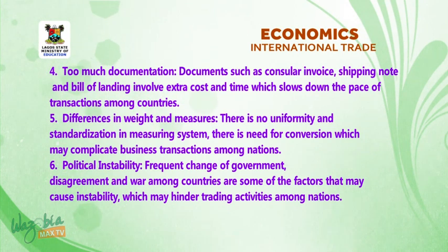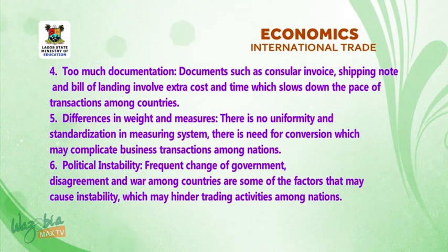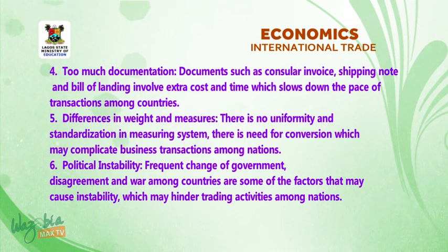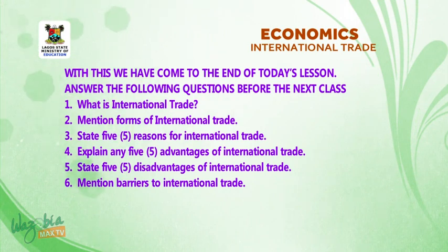5. Difference in weight and measures — there is no uniformity and standardization in measuring systems. There is need for conversion, which may complicate business transactions among nations. 6. Political instability — frequent change of government, disagreements, and war among countries are some of the factors that may cause instability, which may hinder trading activities among nations. With this, we have come to the end of today's lesson.